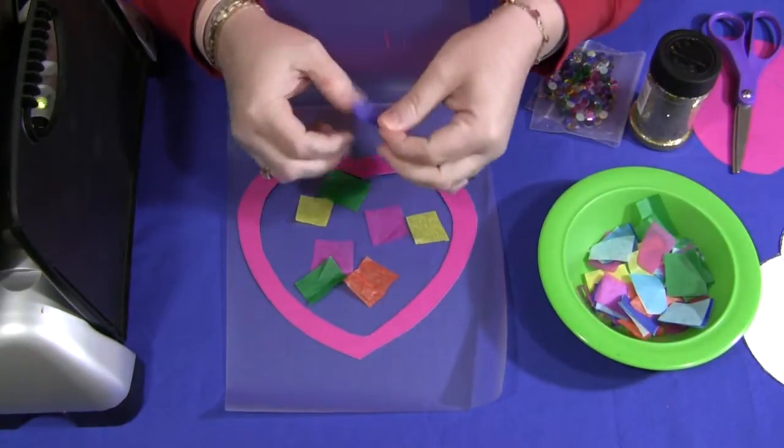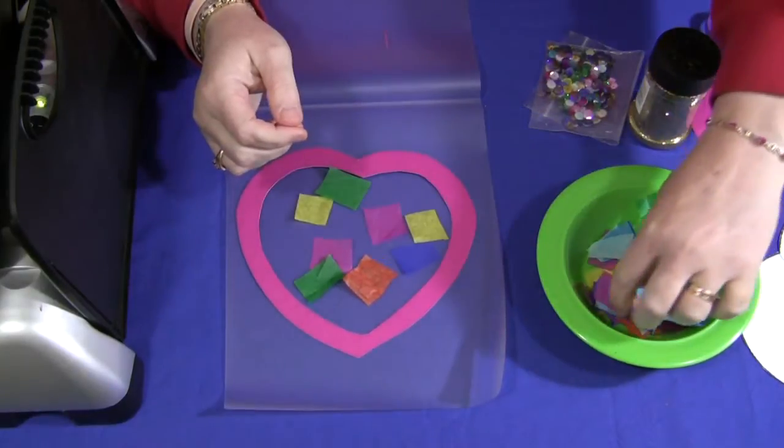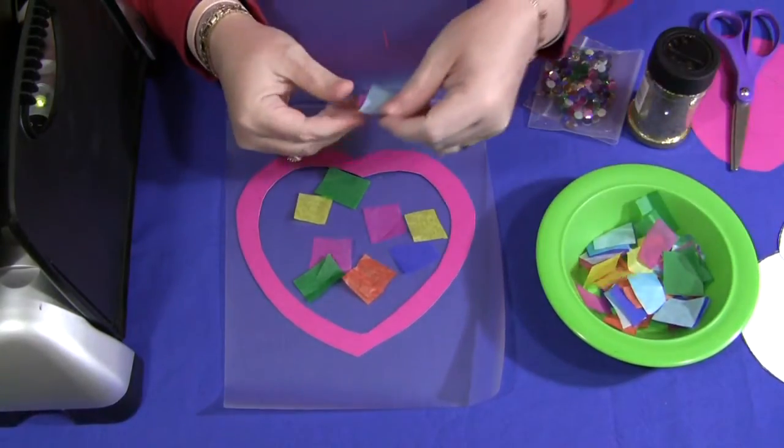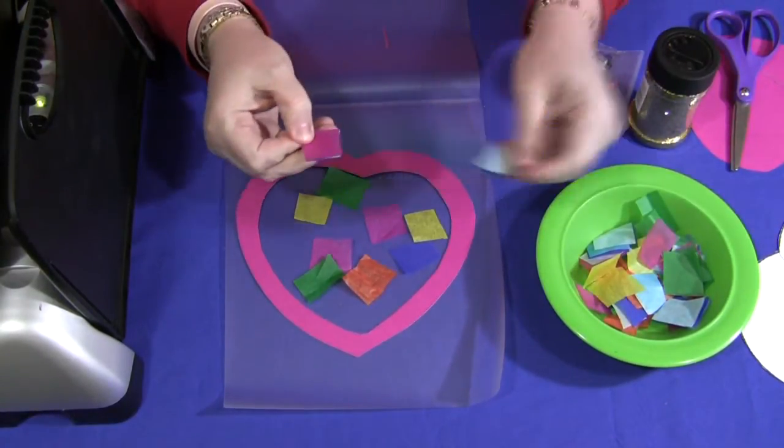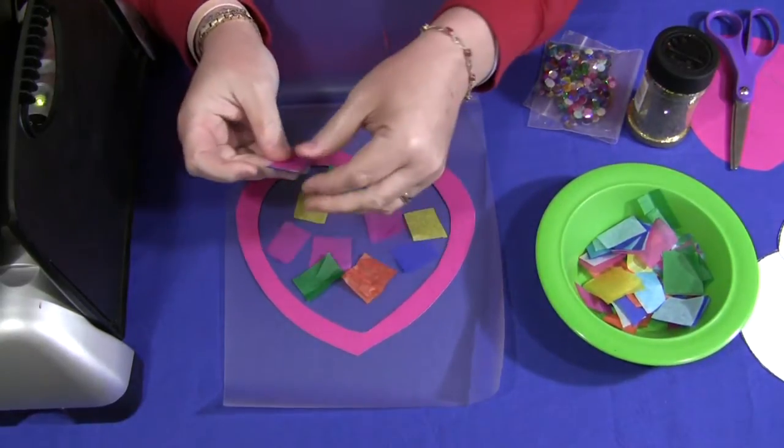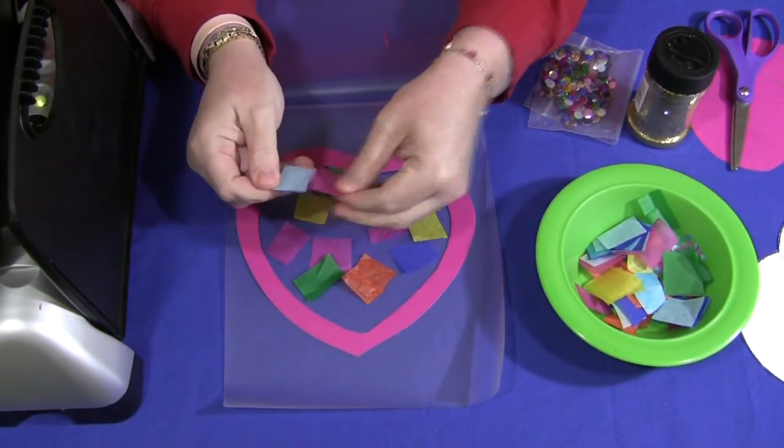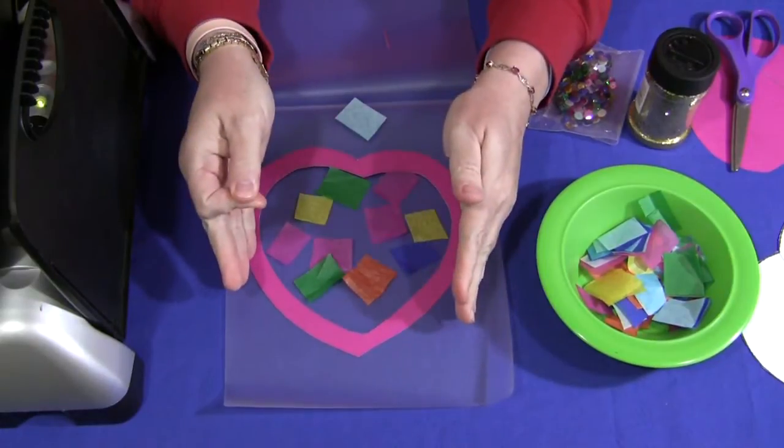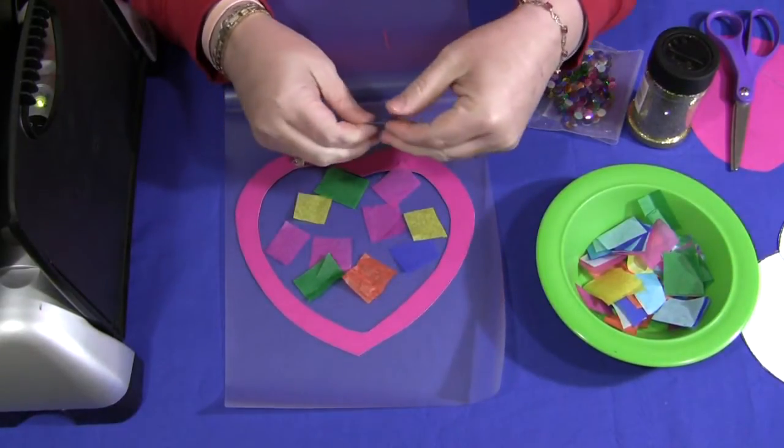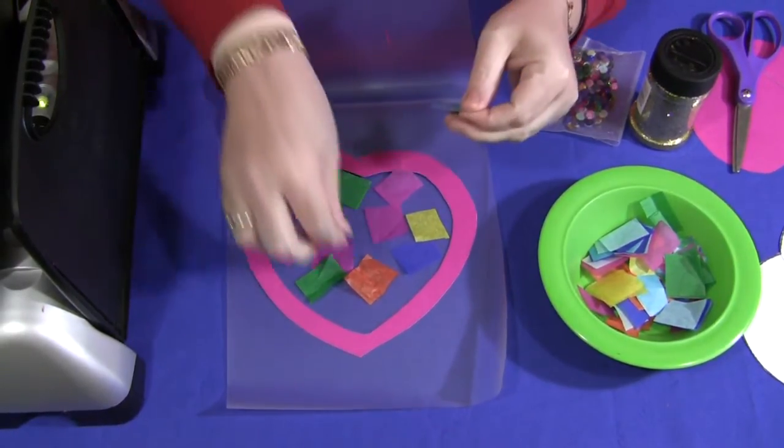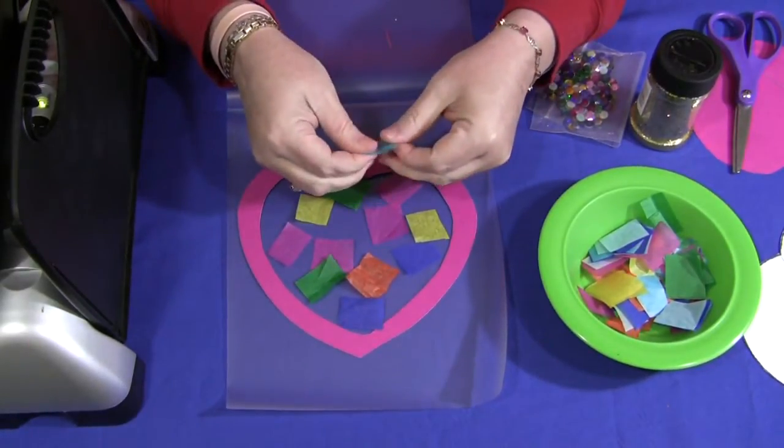And some people like to use crayon shavings in their sun catchers. And that really does make it pretty. But you have to watch the amount of crayon shavings you put in because once you use a laminator, that will melt the crayons and may cause it to run out the sides of the heart. So today I'm choosing not to do that because I think it's going to be pretty with what we are using.